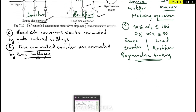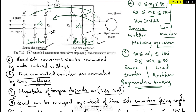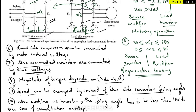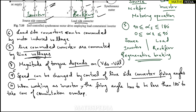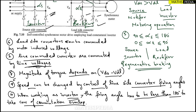The magnitude of torque depends on Vds minus Vdl. Speed can be changed by controlling the line side converter firing angles — that is, by changing the firing angles of the source side converter thyristors. When working as an inverter, the firing angle must be less than 180 degrees to take care of commutation overlap, so the thyristors don't get overlapped. This applies to both the source side and load side converters.